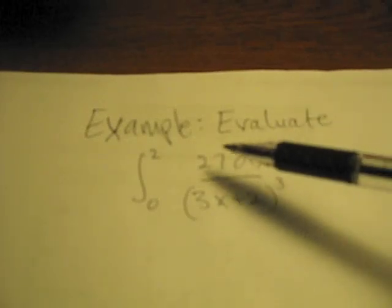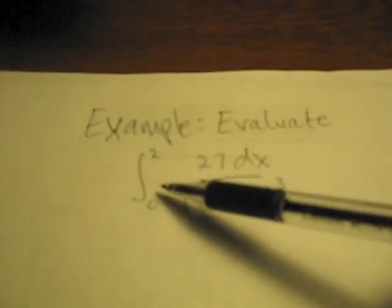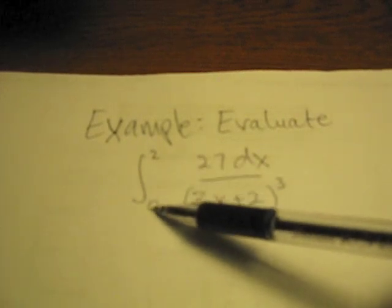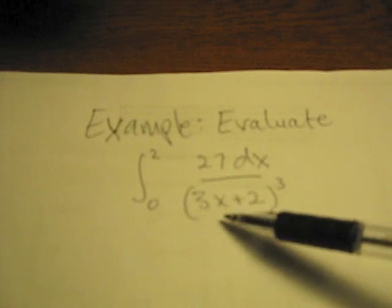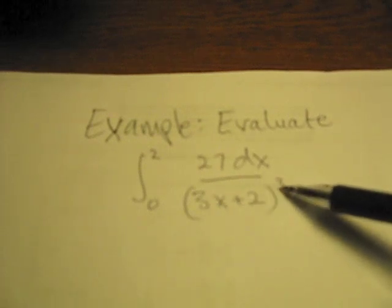Okay, in this question, we're asked to evaluate the integral from 0 to 2 of 27 dx over (3x plus 2) cubed.